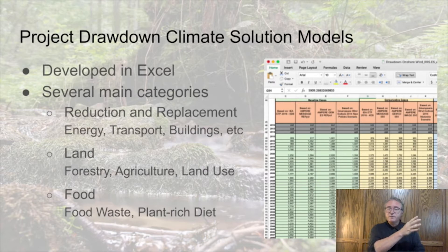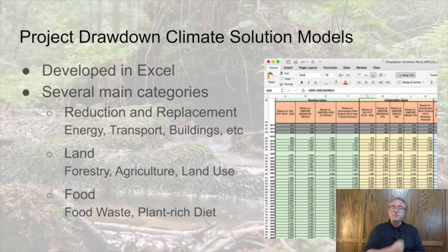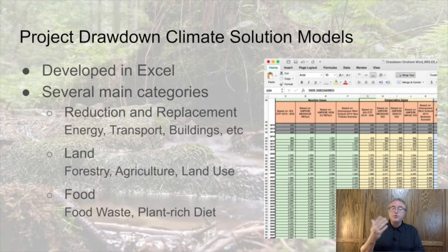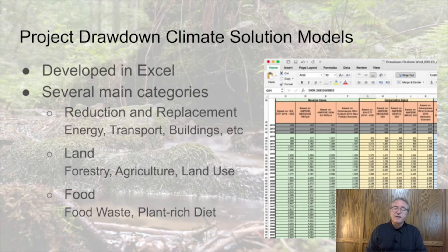Reduction and replacement solutions are where one technology or practice is phased out in favor of a cleaner alternative, and land solutions which deal with agricultural production and land stewardship, and can actually pull previous emissions back out of the atmosphere. There are also a few more unique outliers, mostly dealing with food production at scale, which is a major factor in climate change.